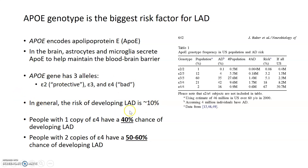In the general population, the risk of developing late-onset Alzheimer's disease is about 10%. People who have one copy of the bad E4 allele for the APOE gene have about a 40% chance of developing late-onset Alzheimer's disease. And individuals who are homozygous E4, or have two copies of the E4 allele, have almost a 50 to 60% chance of developing late-onset Alzheimer's disease.